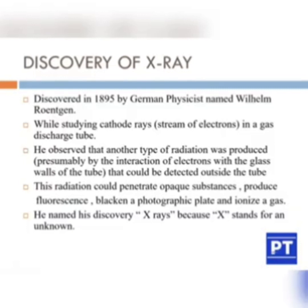X-rays were discovered by a German physicist named William Roentgen in the year 1895. While he was studying cathode rays — a stream of electrons in a glass discharge tube — he observed that another type of radiation was produced, possibly by the interaction of electrons with the glass walls of the tube, and it could be detected outside the tube.